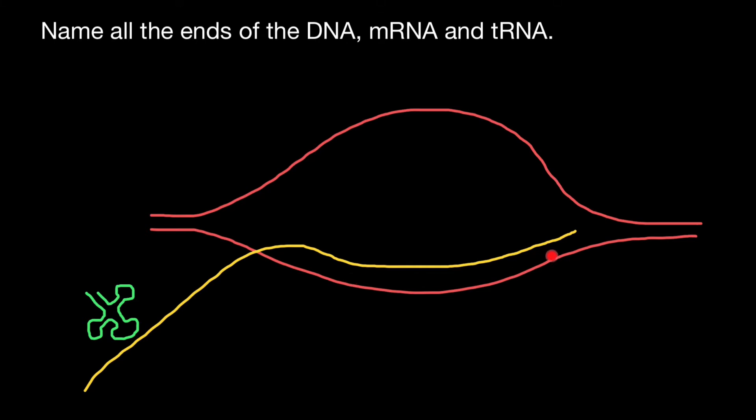Here, with different colors, I am showing double-stranded DNA which formed a transcription bubble. Here is going to be messenger RNA, and here is going to be tRNA.